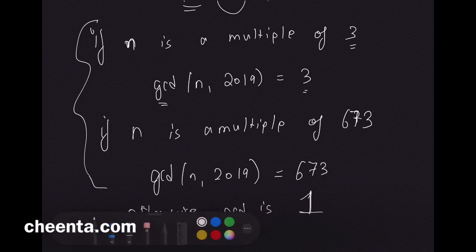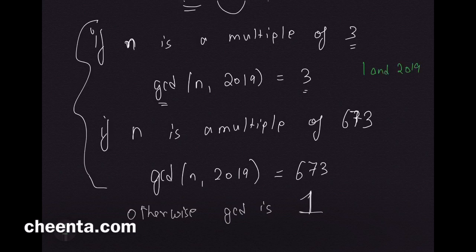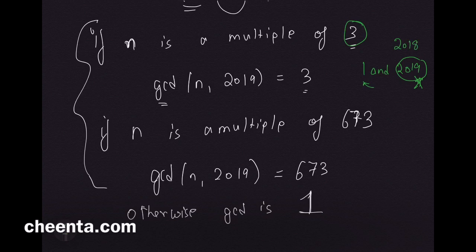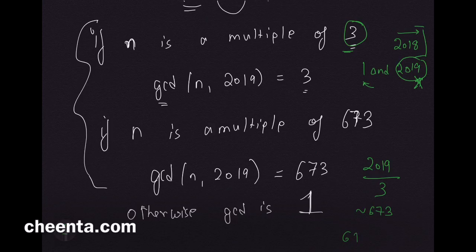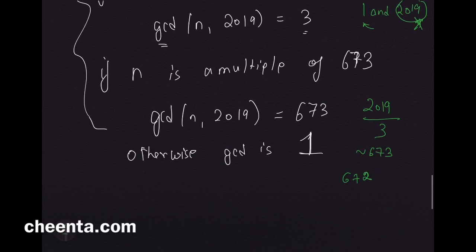How many numbers from 1 to 2018 are multiples of 3? We exclude 2019 and handle it separately. Dividing 2018 by 3 and checking: there are 672 multiples of 3 from 1 to 2018.